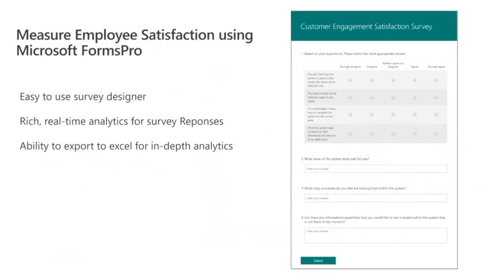This is an example of a customer engagement satisfaction survey using Microsoft Forms Pro. You can use Microsoft Forms Pro as a tool to distribute and gather surveys — it's easy to use, has an easy-to-use survey designer, supports multiple question types and branching based on responses. It also offers real-time analytics for survey responses, making it easy to spot trends, and allows you to export responses to Excel, which can be useful for feeding feedback into your project planning.